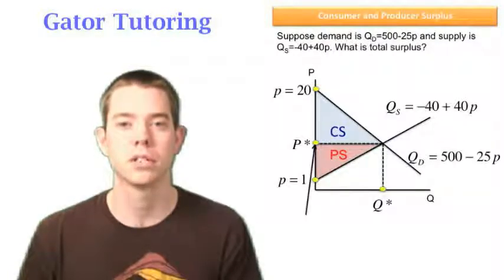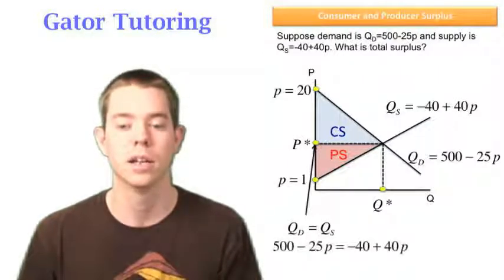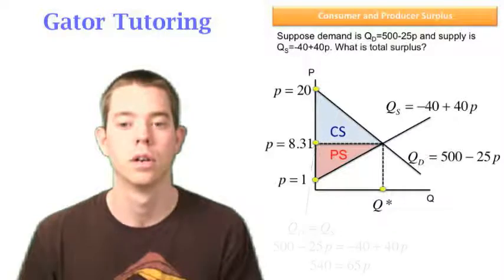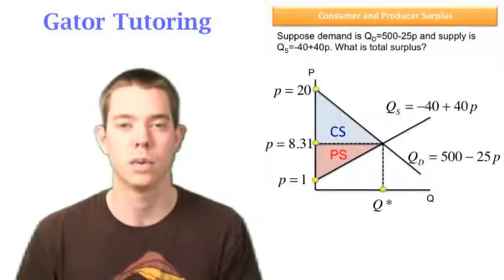This point, P star, is where quantity supplied equals quantity demanded. So we can plug that in and solve for P. In this case, we solve for price to be equal to 8.31 when we set quantity supplied equal to quantity demanded.